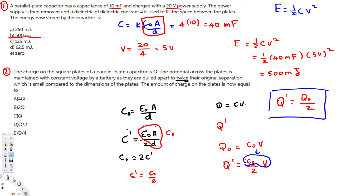Looking at the answer choices, option D matches — Q divided by 2 is the answer. That's how we do this kind of problem. I hope you guys found this video helpful. See you next time.